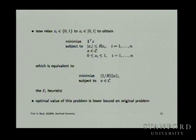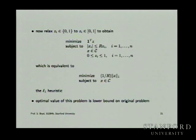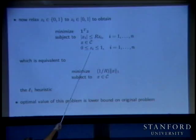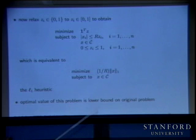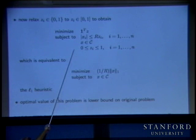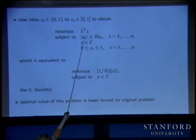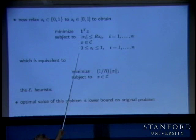We do the standard relaxation: if you have a 0-1 variable, we change it into a continuous variable in [0,1]. That gives the convex hull of the Boolean points. If you stare at this long enough, you realize you've seen it before — this is precisely the linear program that defines the L1 norm. So z_i is an upper bound on (1/r)|x_i|, and this problem is absolutely the same as the L1 minimization.